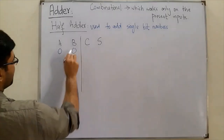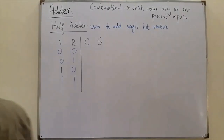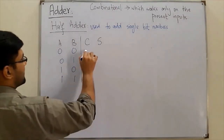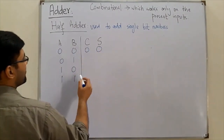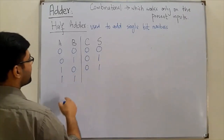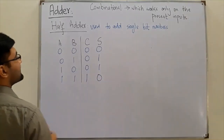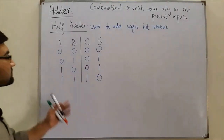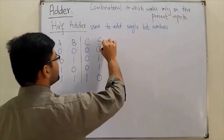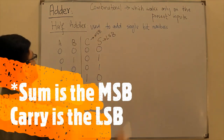The input combinations are 0+0, 0+1, 1+0, and 1+1. If you add 0 and 0, carry is 0 and sum is 0. For 0 and 1, carry is 0 and sum is 1. For 1 and 0, carry is 0 and sum is 1. For 1 and 1, carry is 1 and sum is 0. The sum is the LSB and carry is the MSB.